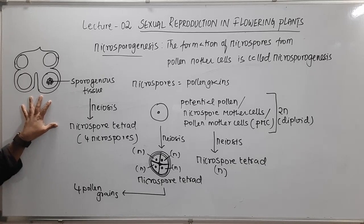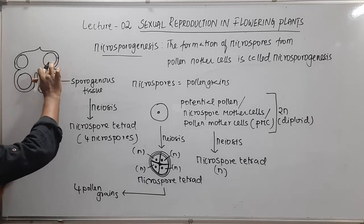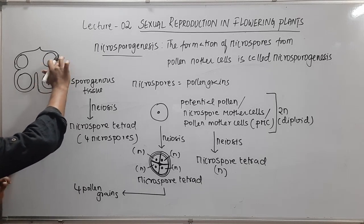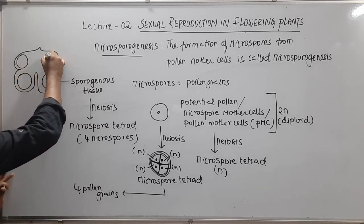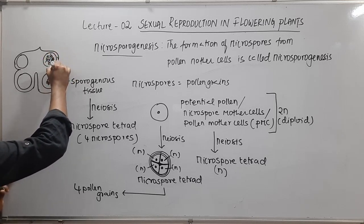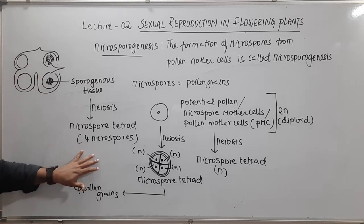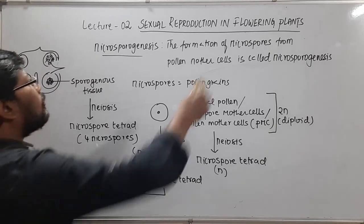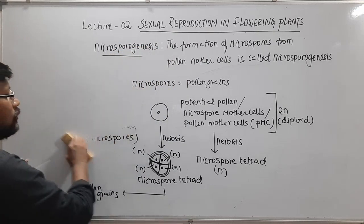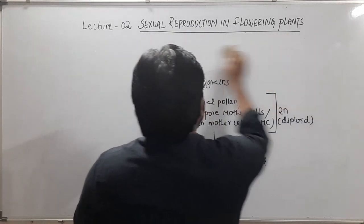By the time the anther matures, the pollen grains are formed. There is a line of dehiscence, and the anther breaks open. The pollen grains present inside are released once dehiscence takes place. That is all about microsporogenesis — the formation of the pollen grains. Now let's look at the structure of pollen grains.